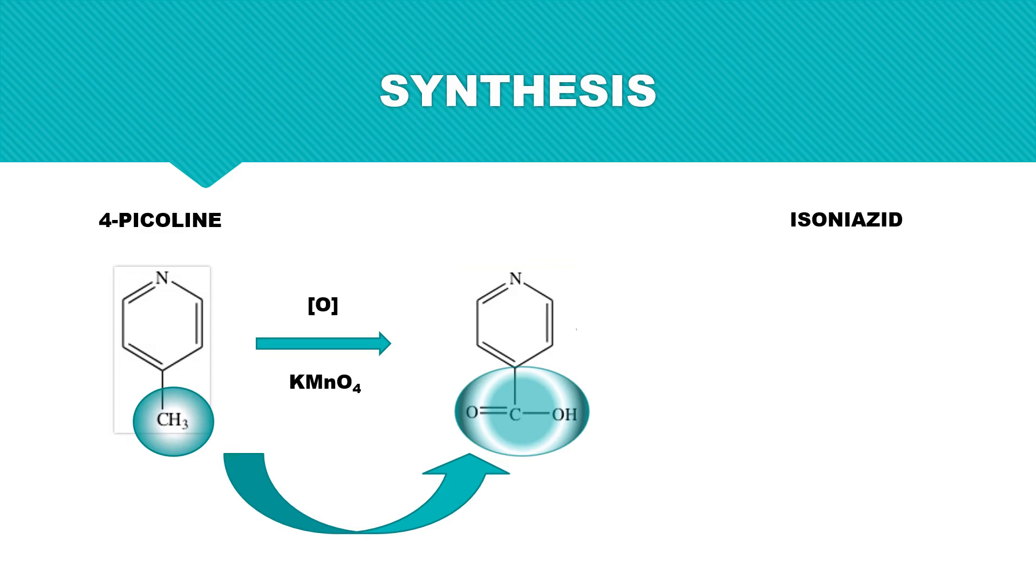First the isonicotinic acid is turned into isonicotinic acid ethyl ester by an acid catalyzed esterification with ethanol. At the beginning of the reaction the carbonyl group is protonated by the acid so the carbon gets more reactive. Now ethanol starts a nucleophile attack at this carbon, the proton is relocated to the hydroxide group of nicotinic acid, and water is split off.